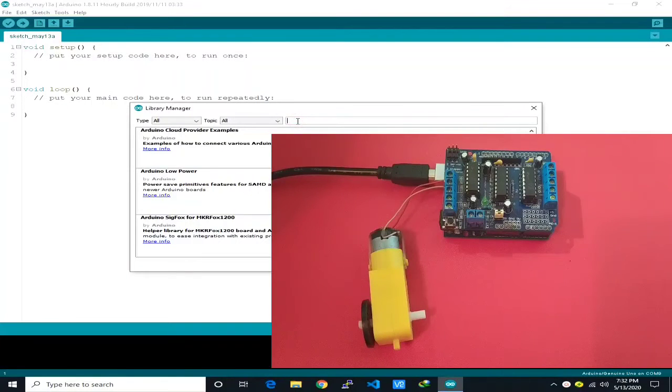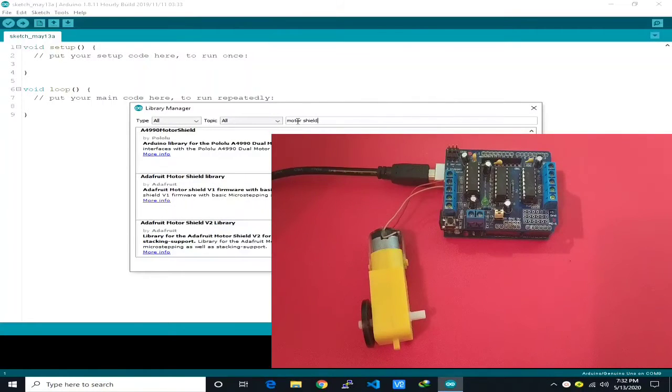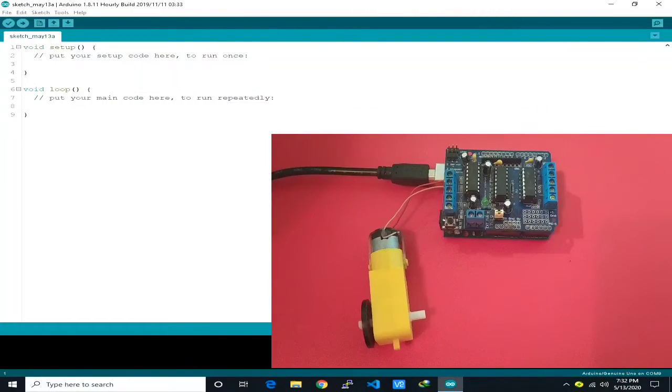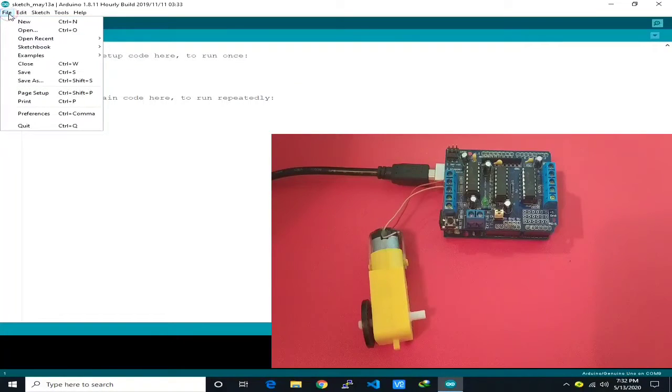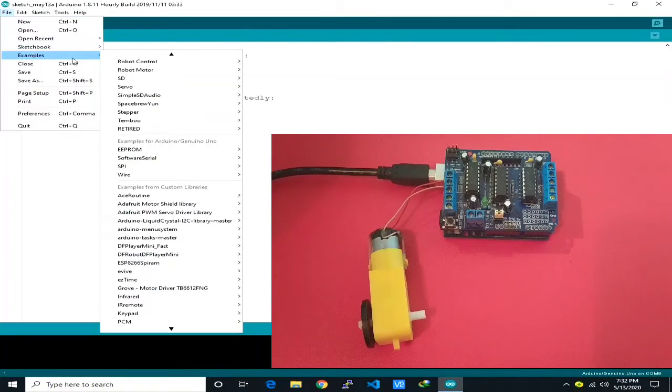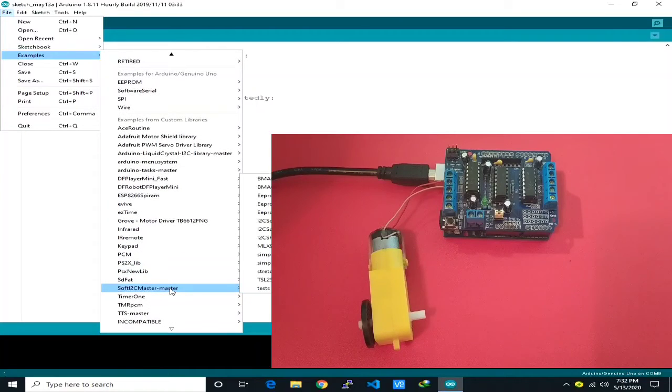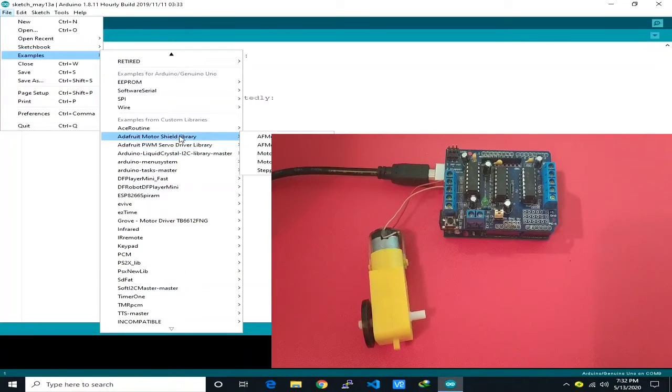Then, we search for motor shield. We will download the Adafruit motor shield version 1. After the download, close. Go to File, Examples, and look for the Adafruit motor shield library. And we will use the example motor test.